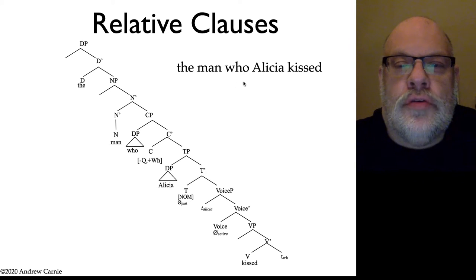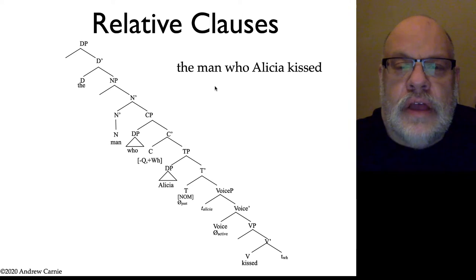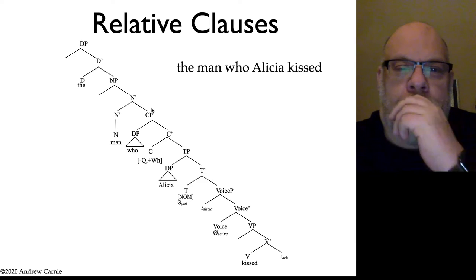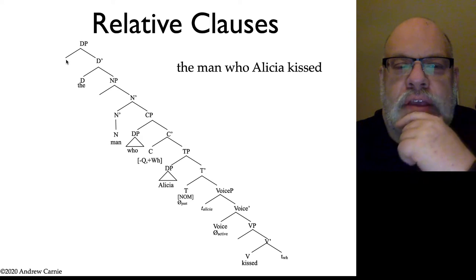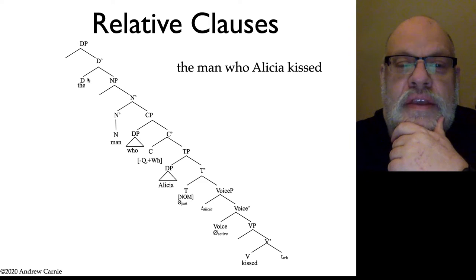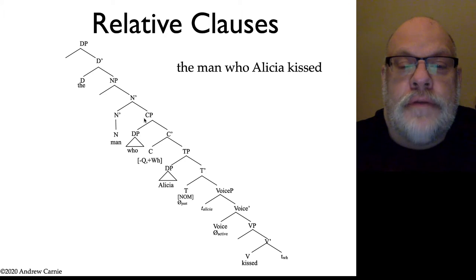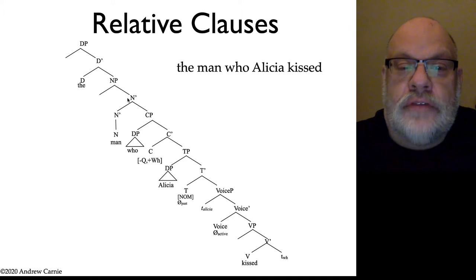The 'who' is acting as what is often called a relative pronoun in traditional grammar. So how do we draw the tree for this? We're going to have a structure much like the one you have in front of you here. We have a DP where 'the' is in the D head, and we have a noun phrase headed by 'man.' And this noun phrase is modified by a CP as an adjunct.